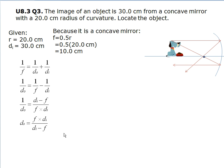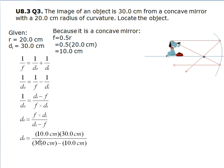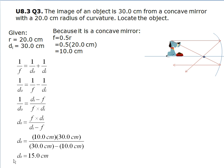So now that we've isolated dO, we can plug in the values that were given to us and the value that we found. So f would be 10.0 centimeters and dI would be 30.0 centimeters. With that, we can figure out the distance of the object is 15.0 centimeters.